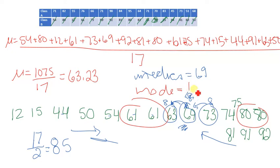And what we would do is just write 61 and 80. There we go.